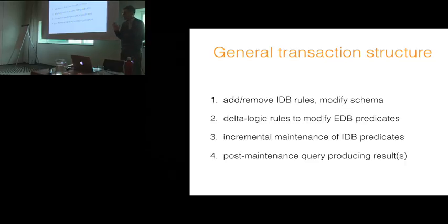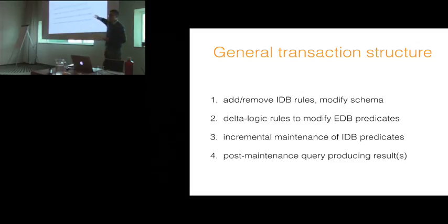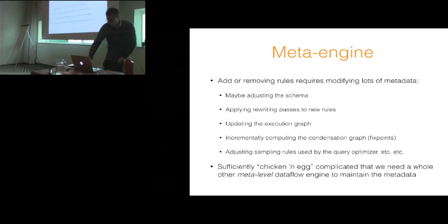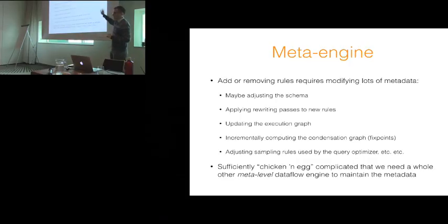Our system processes transactions, which can have four different parts. First, you can optionally add or remove IDB rules — modifying the installed program. Second is delta logic that will modify the input predicates. The system then incrementally maintains all the computations you have installed. And optionally, you can do a query on the modified state that's been updated. One of the challenges we had is that when someone adds a new rule to the database, there are tons of things that have to change in our internal metadata — modifying the execution graph, figuring out if that introduces a new fixed point, and so on. We actually have a whole other data flow interpreter just for handling meta-level operations.